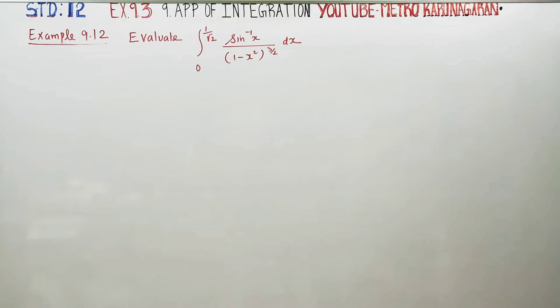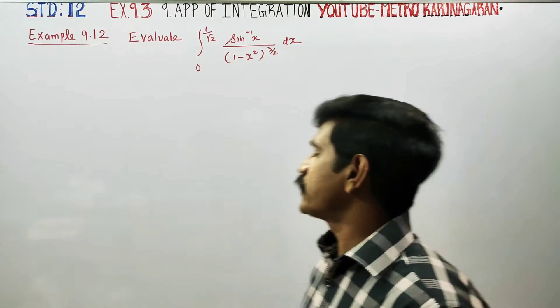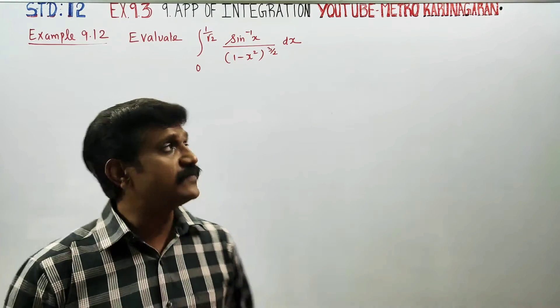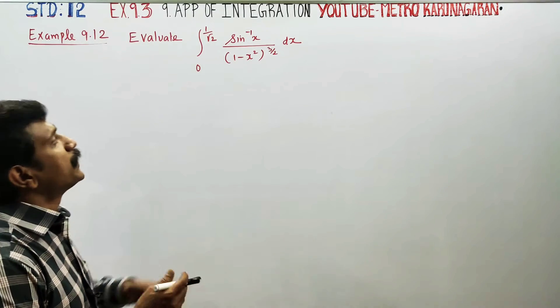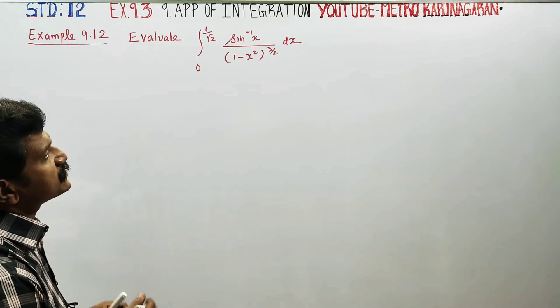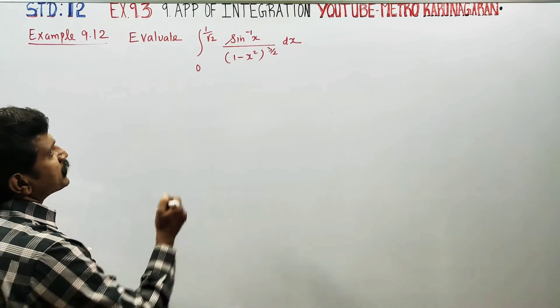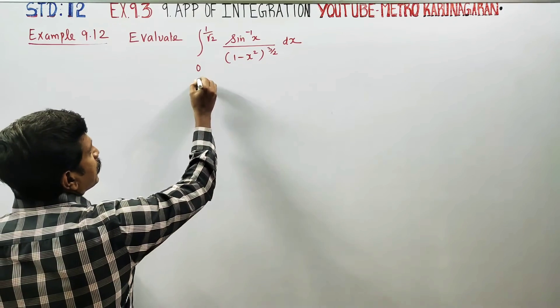Dear Toll Standard students, in Example 9.12, you have to evaluate the integral from 0 to 1/√2 of sin⁻¹x divided by (1 minus x squared) to the power 3 by 2.